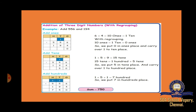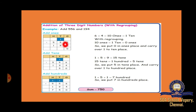Next is carrying over. For 556 plus 194: ones place — 6 plus 4 equals 10, so write 0 and carry 1 to the tens place. Tens place — 1 plus 5 plus 9 equals 15, so write 5 and carry 1 to hundreds. Hundreds place — 1 plus 5 plus 1 equals 7. The answer is 750.